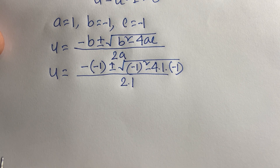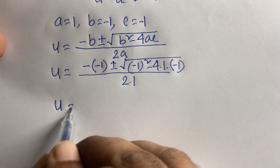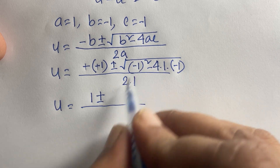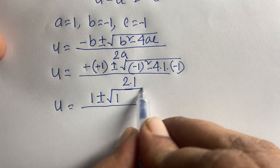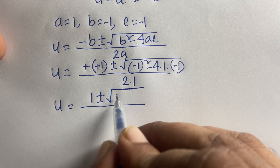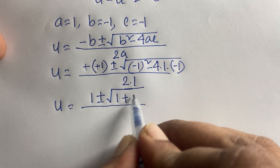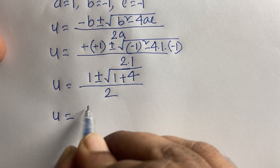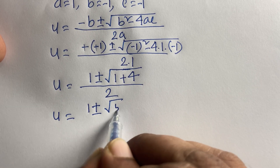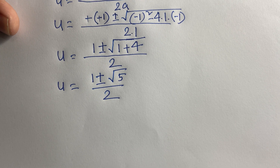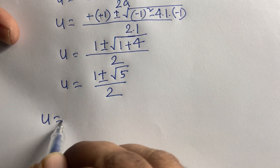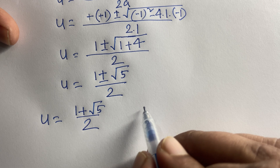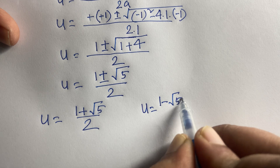This simplifies to u equals 1 plus or minus the square root of (1 plus 4) over 2, since (minus 1)^2 is positive 1 and minus times minus gives plus 4. So u equals (1 plus or minus square root 5) over 2. The two cases are: u equals (1 plus √5) over 2, or u equals (1 minus √5) over 2.